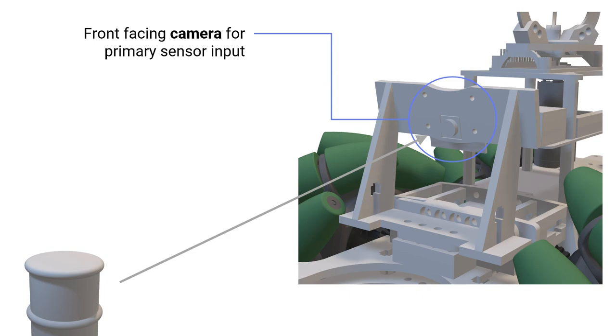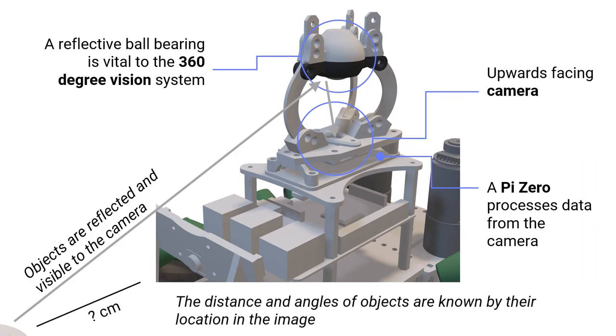This is supplemented by a 360-degree camera system. Objects surrounding the 1B are reflected and recorded by an upwards facing camera and these images are processed by a dedicated Pi Zero. This is especially useful for complex navigation problems.